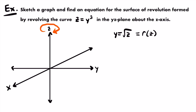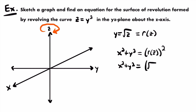To find an equation for this surface of revolution formed by revolving this curve around the z-axis, we use the general form for revolving around the z-axis: x squared plus y squared equals the radius function in terms of z squared. Since r of z equals the square root of z, we plug that in to get x squared plus y squared equals the square root of z squared. The square root and the square cancel each other out, so we have x squared plus y squared equals z.